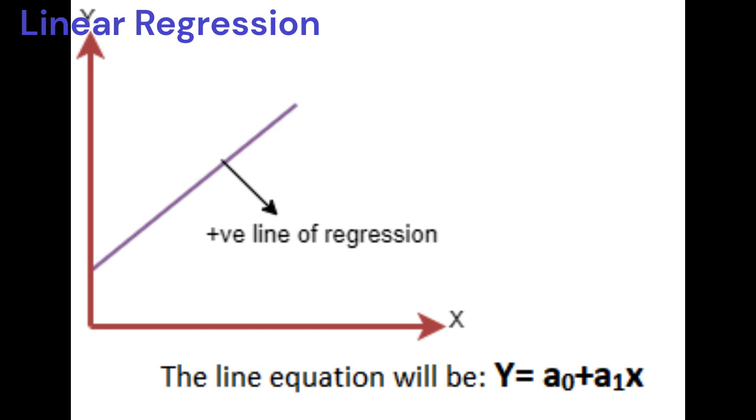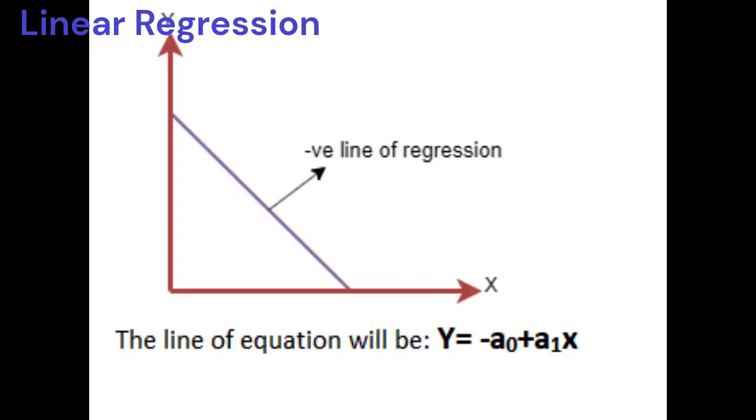Negative linear relationship: If the dependent variable decreases on the y-axis and independent variable increases on the x-axis, then such a relationship is called a negative linear relationship.